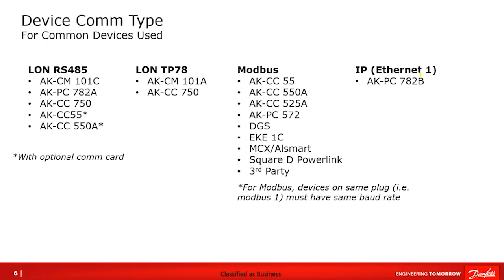Lastly, our Ethernet-based devices — really just one today that we use. Our PC782B is a variation of the 782A, offering the same functionality and control, but with IP or Ethernet communication as opposed to Echelon 485. We'll probably see more devices transition to this side of things moving forward.